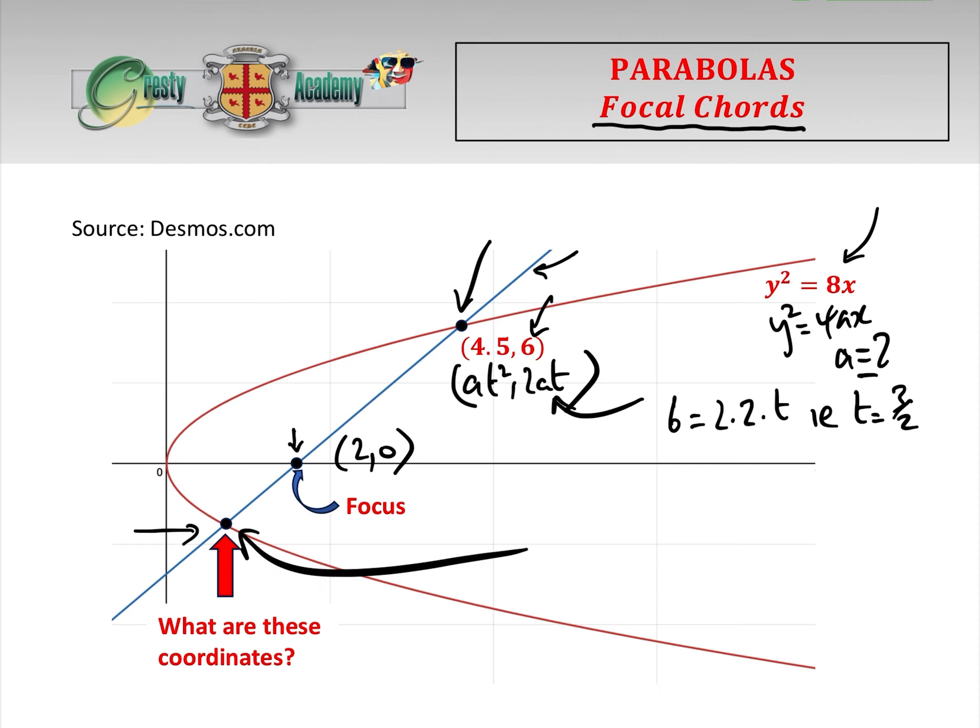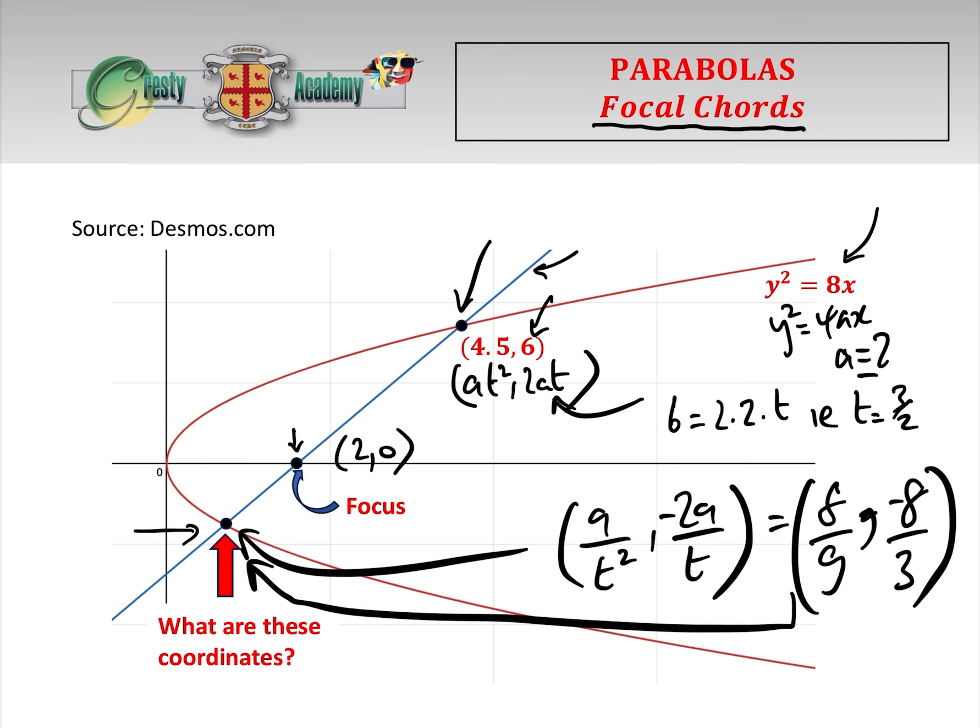And so therefore we can simply state that this coordinate here is, as we've just worked out, a over t squared minus 2a over t, which is just sticking our stuff in, 8 over 9 minus 8 over 3.